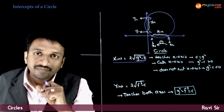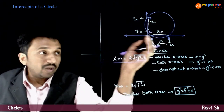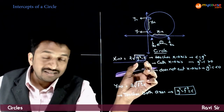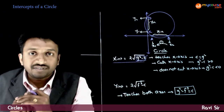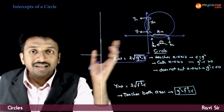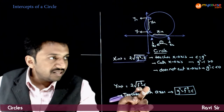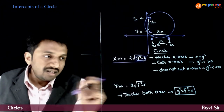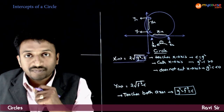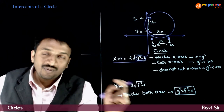If the circle does not cut the x-axis, the x-intercept is undefined, meaning g² − c is negative and the square root is not defined. So if g² − c < 0, the circle does not cut the x-axis. Similar results apply to the y-intercept: if f² = c, the circle touches the y-axis; if f² > c, it cuts the y-axis; if f² < c, it does not cut the y-axis.